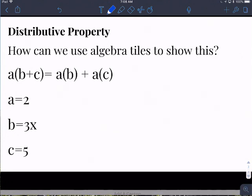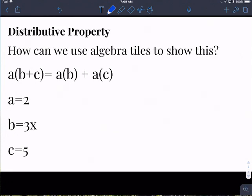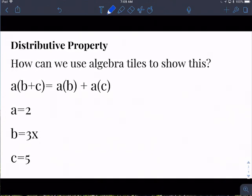So if we actually assign a value to each of these numbers, what would that look like? So if we had that A was 2 and then B is 3X and C is 5. So what we really have here is two groups of 3X plus 5. That's how we would say that. The 2 on the outside tells us how many groups we have and inside our parentheses tells us what is in each group. So what would that look like with algebra tiles? Let's take a look.